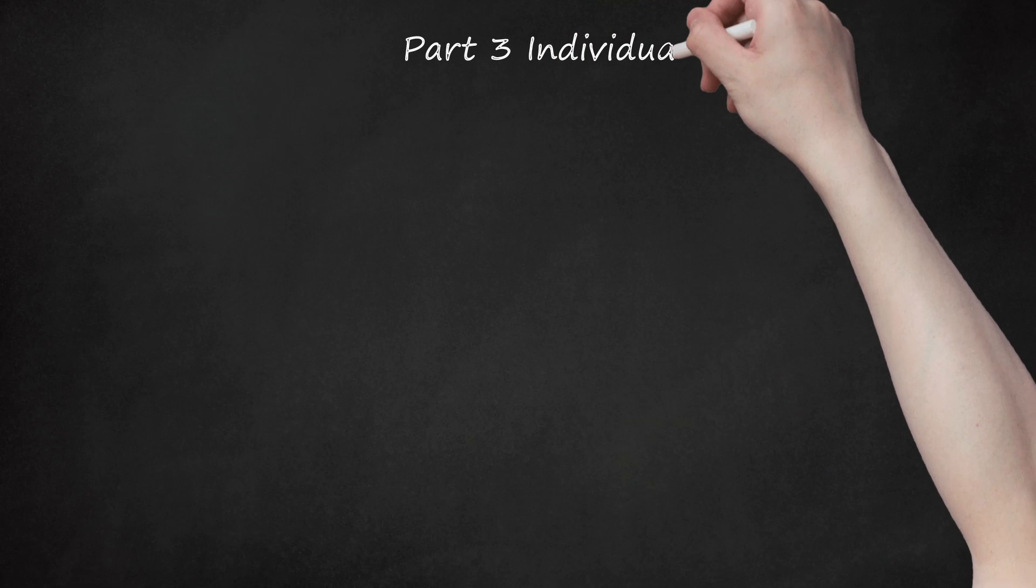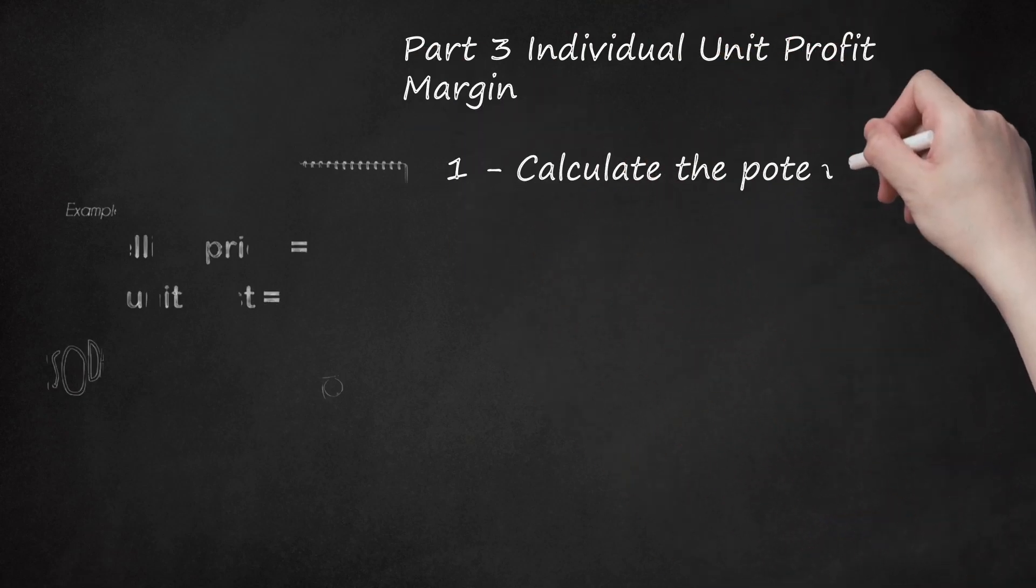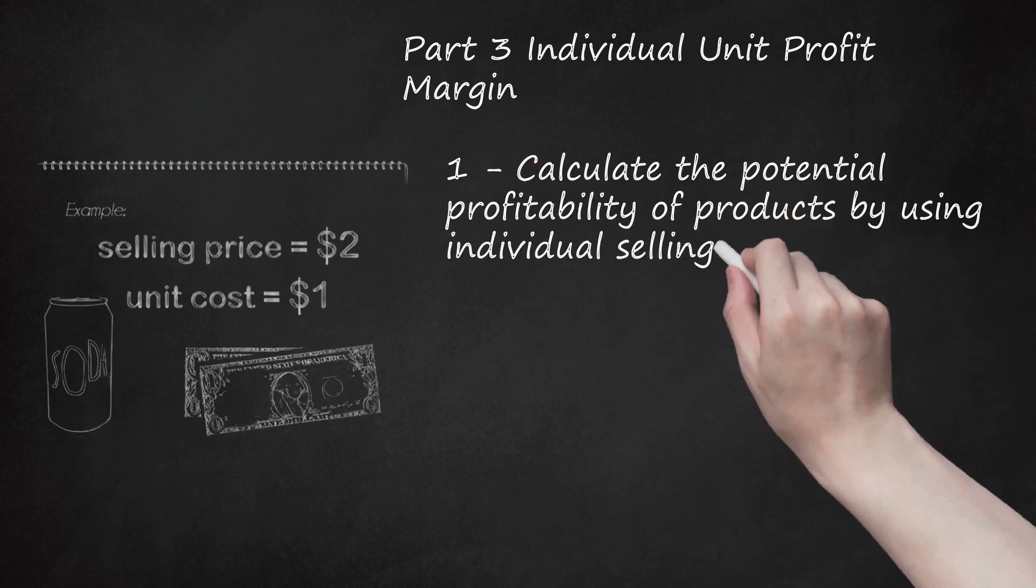Part 3: Individual Unit Profit Margin. Step 1: Calculate the potential profitability of products by using individual selling prices and unit costs.